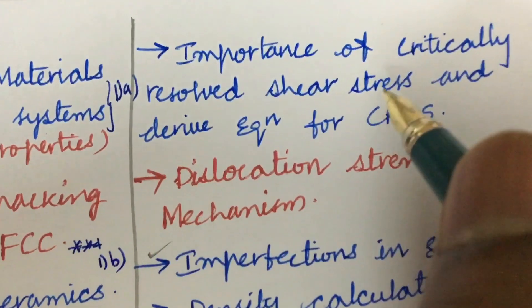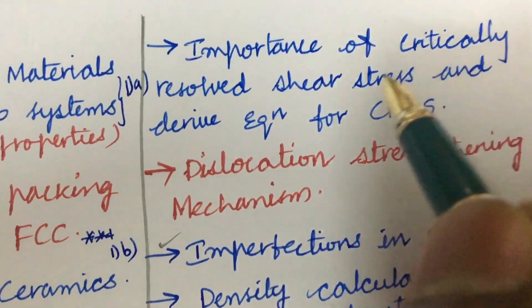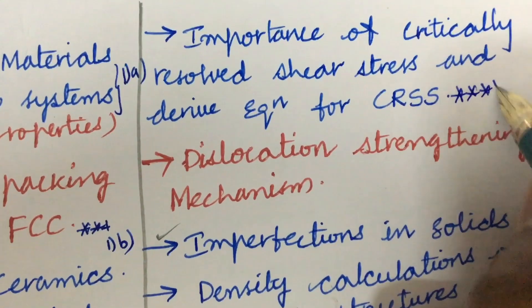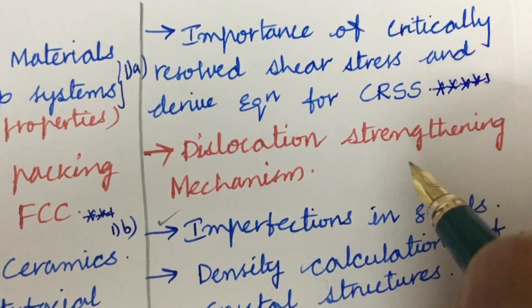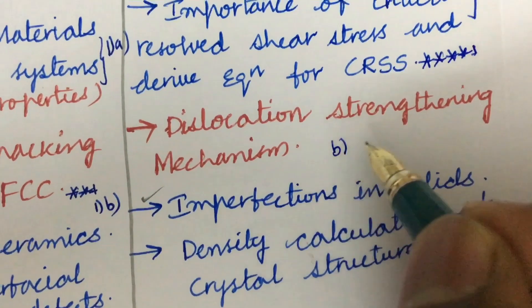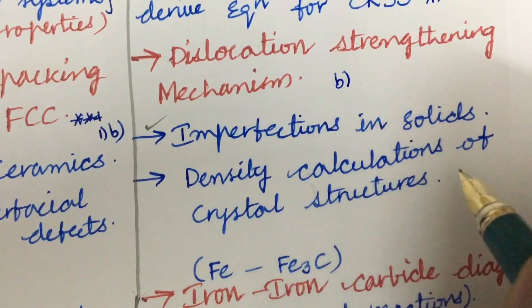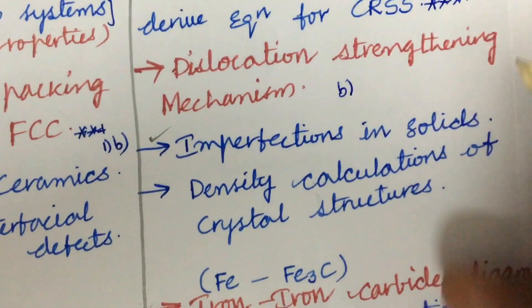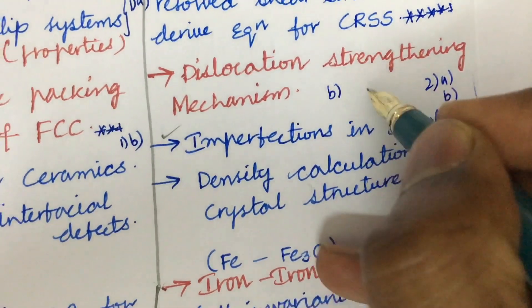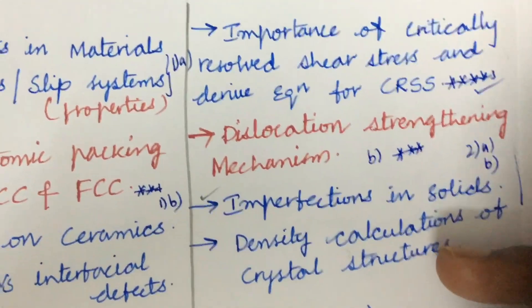The second question is all about the importance of critically resolved shear stress. Deriving the equation for CRSS is said to be a very very important gunshot question. Dislocation strengthening mechanisms, the B equation, imperfections in solids, and density calculation of crystal structures are also important. From these parts we can expect two questions, and these are considered gunshot questions.